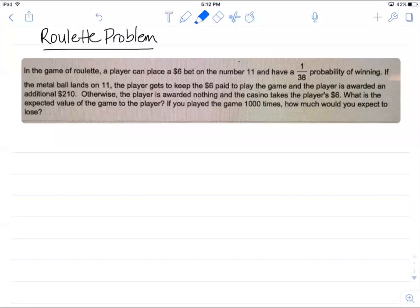So the $6 is the wager and the $210 would be the player's winnings if the player's number comes up. Otherwise, if the ball lands on a number other than the player's number, the player is awarded nothing and the casino keeps the player's wager.